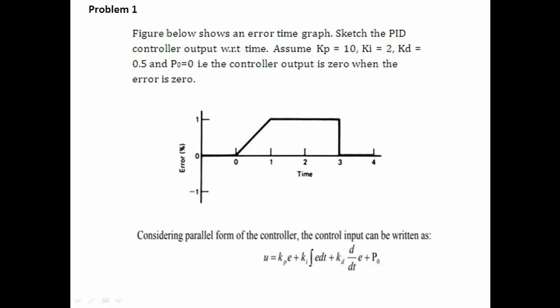Hello friends, in this video we are going to see one numerical on PID controller parallel form. This is the problem statement — based on an error versus time graph, we have to plot PID controller output with respect to time. Assumptions given: kp = 10, ki = 2, kd = 0.5, and p0 = 0, meaning the controller output is 0 when the error is 0. This is the PID controller in parallel form, and the controller signal u is written using the parallel form equation. For a series form there is a different equation.